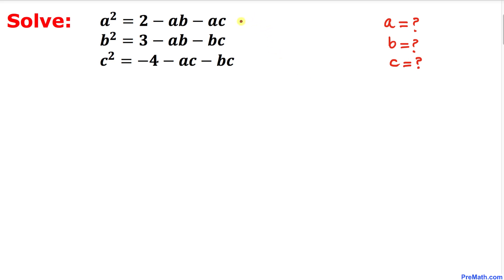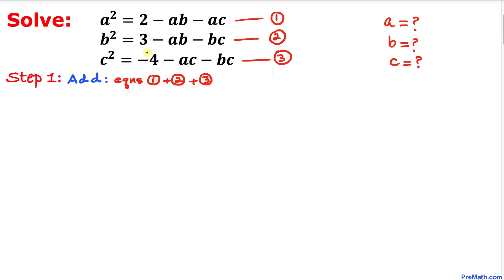Let me call the first equation as equation number one, the second equation as number two, and the third equation as number three. Now let's go ahead and add all three equations. On the left hand side, if we add a² plus b² plus c², we can write a² plus b² plus c².